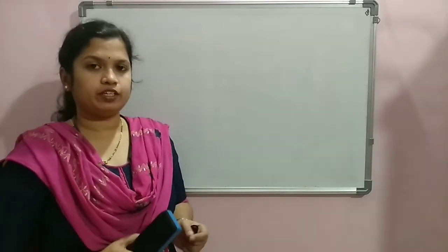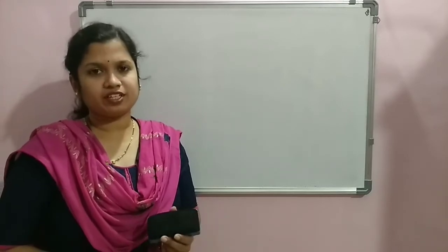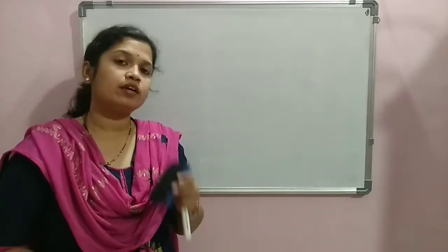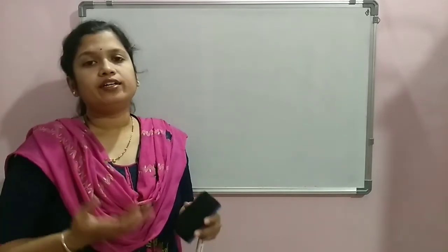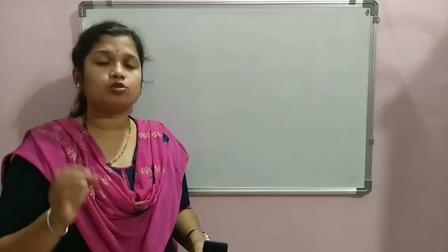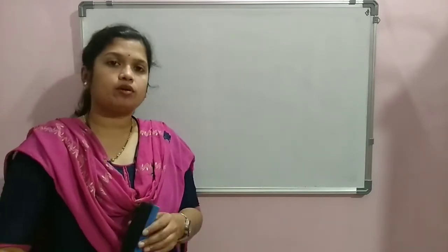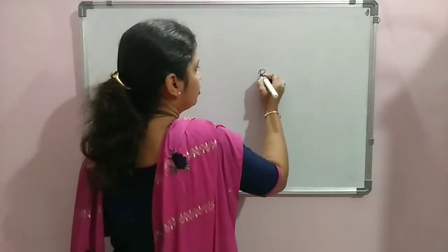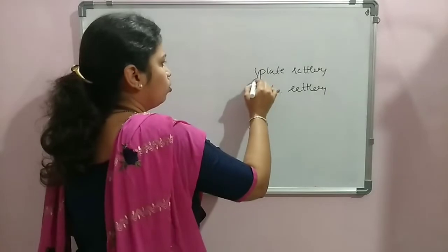In our session on sedimentation, we have understood the concept of sedimentation, how the process takes place, what conditions affect it, and we learned some design aspects of the sedimentation tank. A typical sedimentation tank is considered old and outdated because it works under natural conditions, requiring a large area to slow the velocity and a large detention time. To overcome these disadvantages, we now have plate settlers and tube settlers.